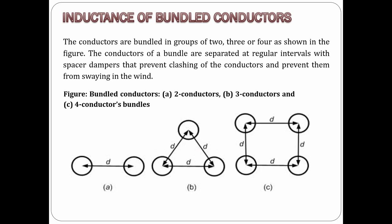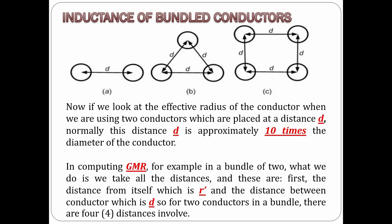We have two, three, and four bundled conductors, wherein the bundles are separated by spacer dampers to prevent clashing of the conductors. For example, in the two bundled conductors with distance d between conductors, experts say the normal distance d is approximately 10 times the diameter of the conductors.